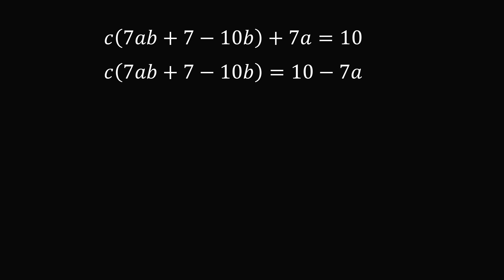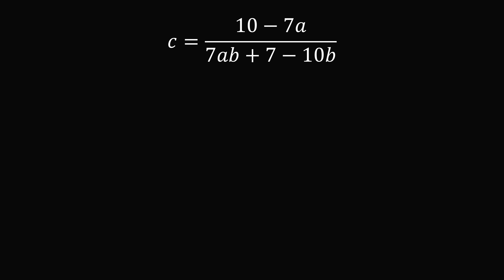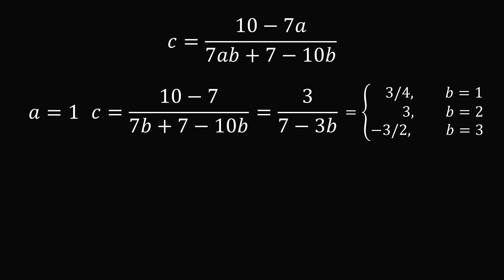We subtract 7a from both sides and divide by 7ab plus 7 minus 10b, solving that c equals 10 minus 7a all over 7ab plus 7 minus 10b. Now we know a, b, and c are positive integers. Let's say a equals 1. Substituting in, c equals 10 minus 7 all over 7b plus 7 minus 10b, which simplifies to 3 divided by 7 minus 3b. Testing values: if b equals 1 or 2 or 3, we find that b equals 1 doesn't work (it's a fraction), b equals 3 gives negative 3 halves, and b equals 2 gives c equals 3. So a equals 1, b equals 2, c equals 3.